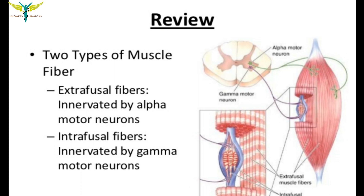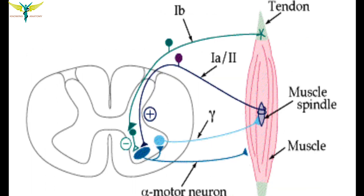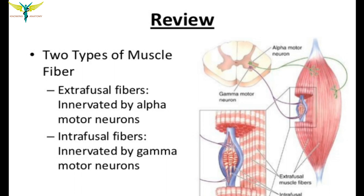These gamma motor neurons are usually controlled by the basal ganglia, specifically the nucleus of substantia nigra. Any defect in the basal ganglia can lead to exaggeration of the muscle tone.